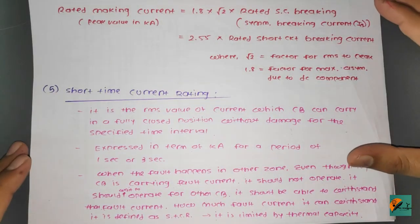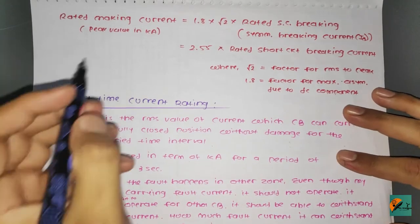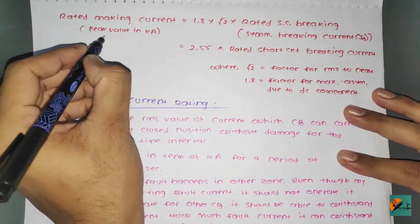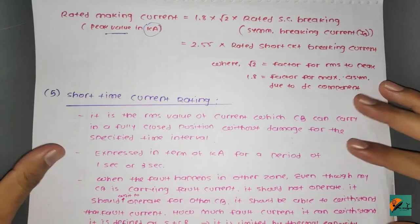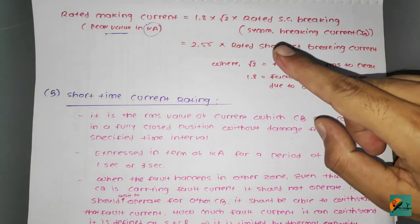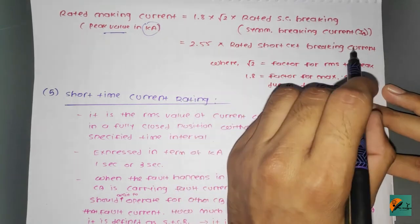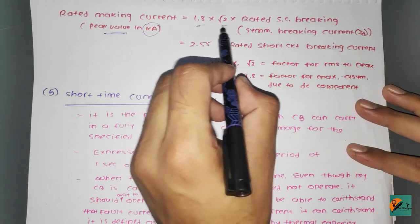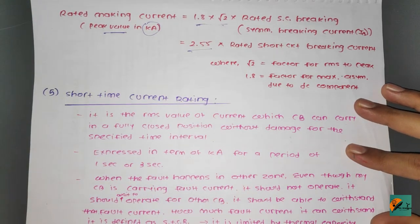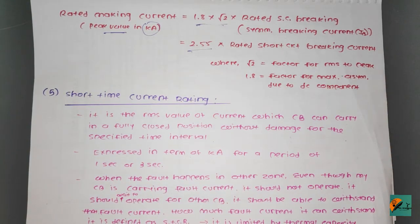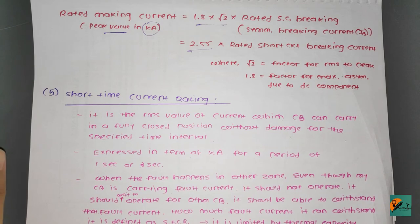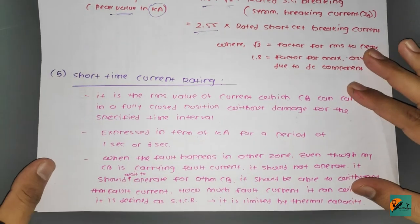The circuit breaker should be able to close without difficulty and withstand the mechanical forces developed during closure. This is checked by carrying out a making current test. The rated making current equals 1.8 × √2 × rated short circuit breaking current = 2.55 × I_b, where √2 is the RMS-to-peak factor and 1.8 is the factor for maximum asymmetry due to the DC component.